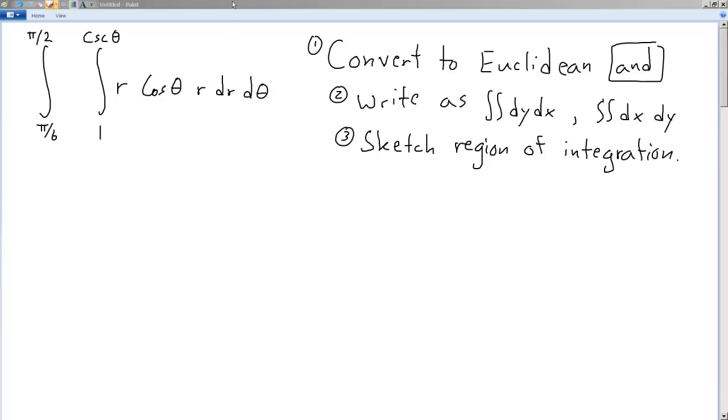Now this is an interesting problem. We're given what looks to be a pretty awkward integral here and we want to do three things. We want to convert to Euclidean and write as a double integral dy dx as well as dx dy, and we also want to sketch the region of integration.